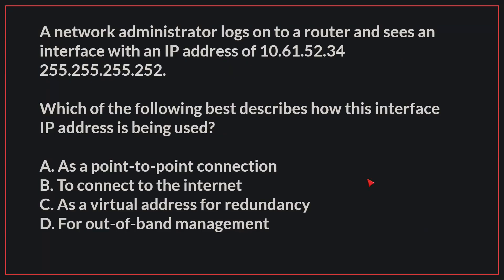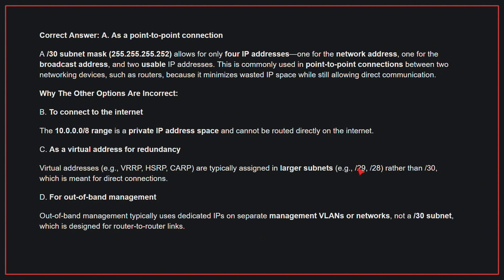A network administrator logs onto a router and sees an interface with an IP address of 10.61.52.34/255.255.255.252. Which of the following best describes how this interface IP address is being used? The correct answer is A: as a point-to-point connection. A /30 subnet mask, also known as 255.255.255.252, allows for only 4 IP addresses — one for the network address, one for the broadcast address, and two usable IP addresses. This is commonly used in point-to-point connections between two networking devices, such as routers, because it minimizes wasted IP space while still allowing direct communication.